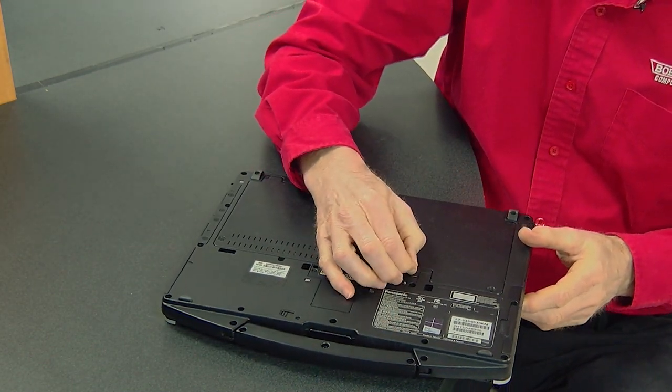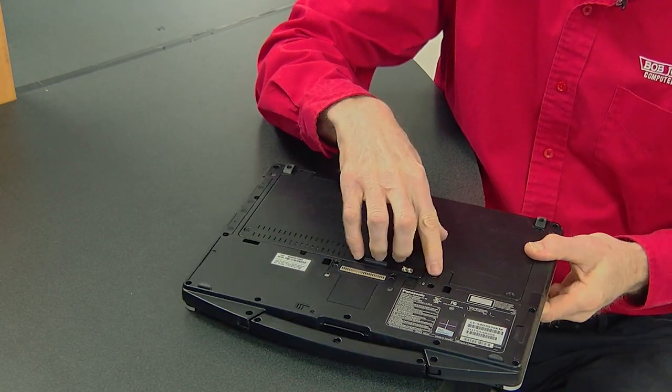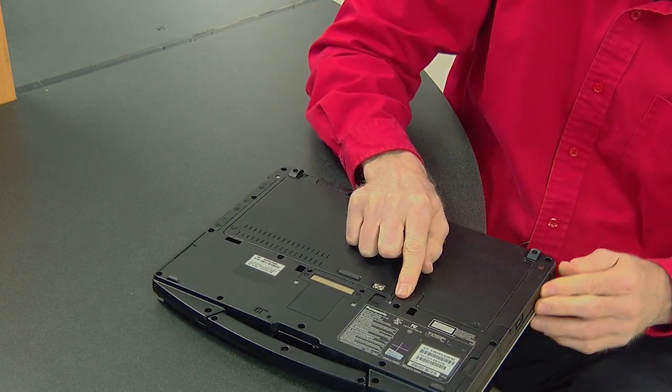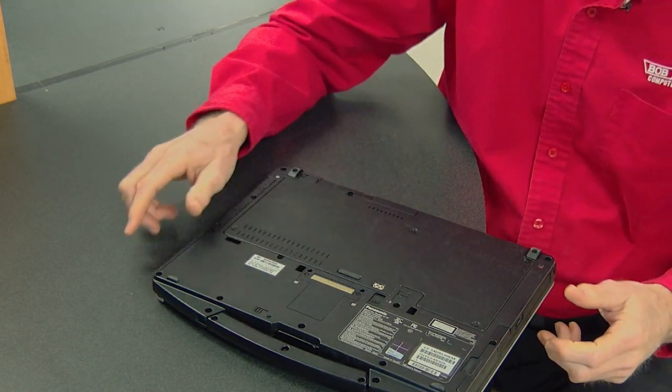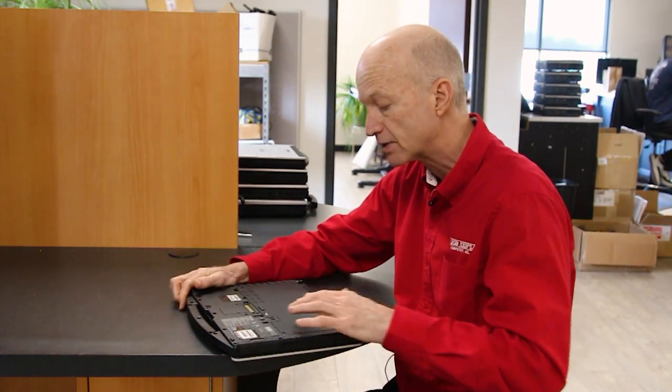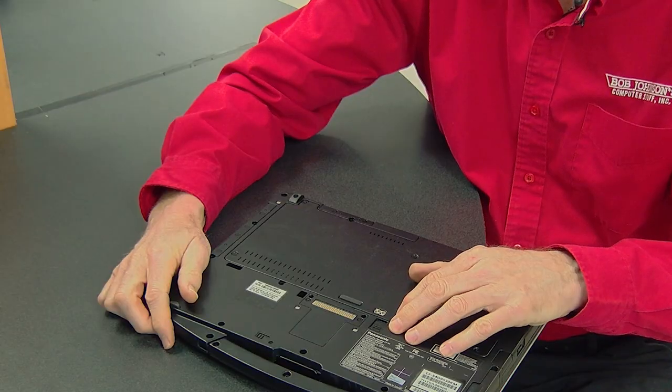You just slide the button here to the side, and the CD-ROM, you can pull it right out. It's not a big deal. I'm not going to do that today because I have to take the screw out because there is a screw that holds the switch in place.